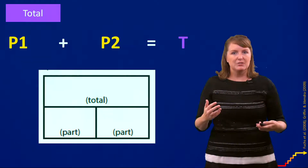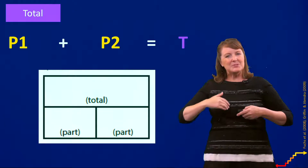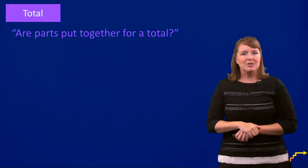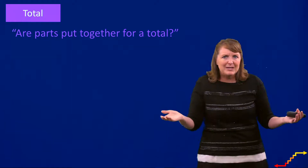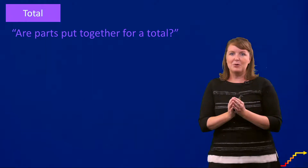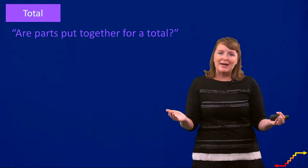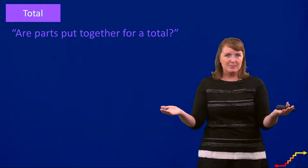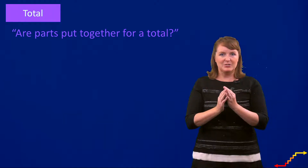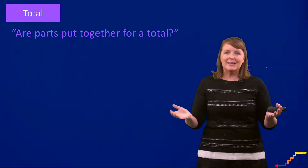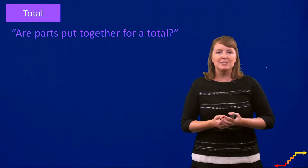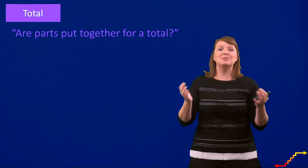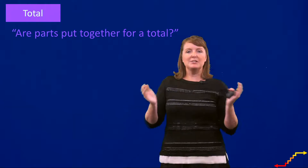Now we've got our understanding of a total problem and we have tools to solve one. But to help students really cue into whether this is a total problem, it's good to have a precise question. We don't ask, 'Oh, do you think this is a total problem?' We say: 'Are parts put together for a total?' And you'll notice I'm also using my hands — parts spread apart, then brought together for a total. Research shows students really latch onto those gestures and will use their hands to show what type of problem it is. So use a combination of gestures and language.